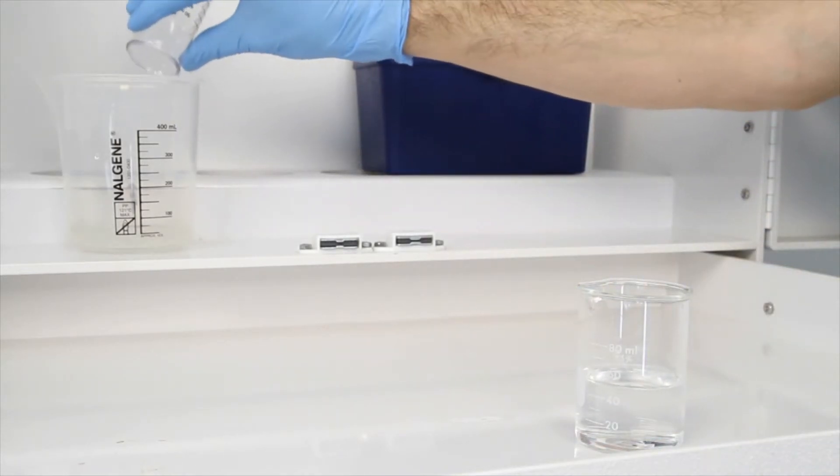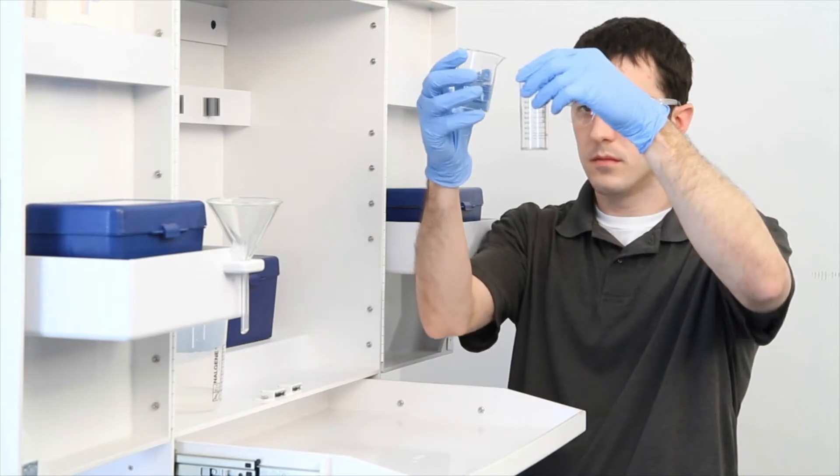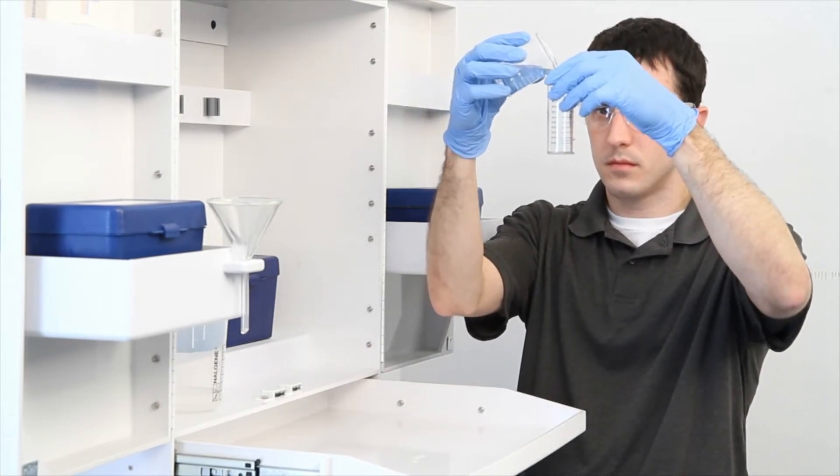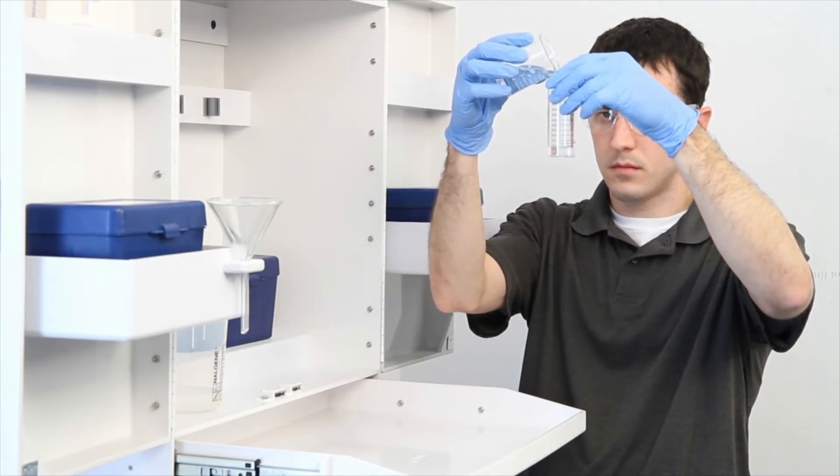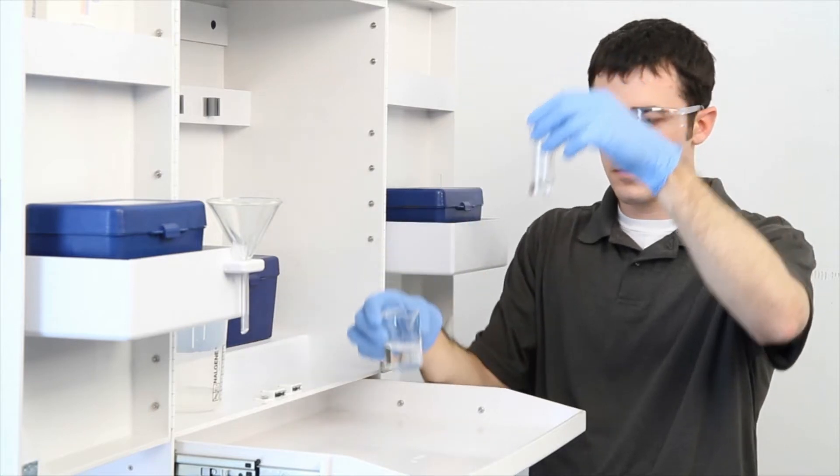To get an accurate sample size, hold the vial close to eye level. Once you feel you have an accurate sample, place the vial on a level surface and bend down to eye level.